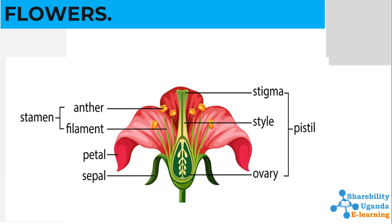The stigma is the sticky surface at the top of the pistil. It traps and holds the pollen grains during pollination. The style is the tube-like structure that holds up the stigma. The style leads down to the ovary that contains the ovules. Other parts of the flower that are important are the petals and the sepals.